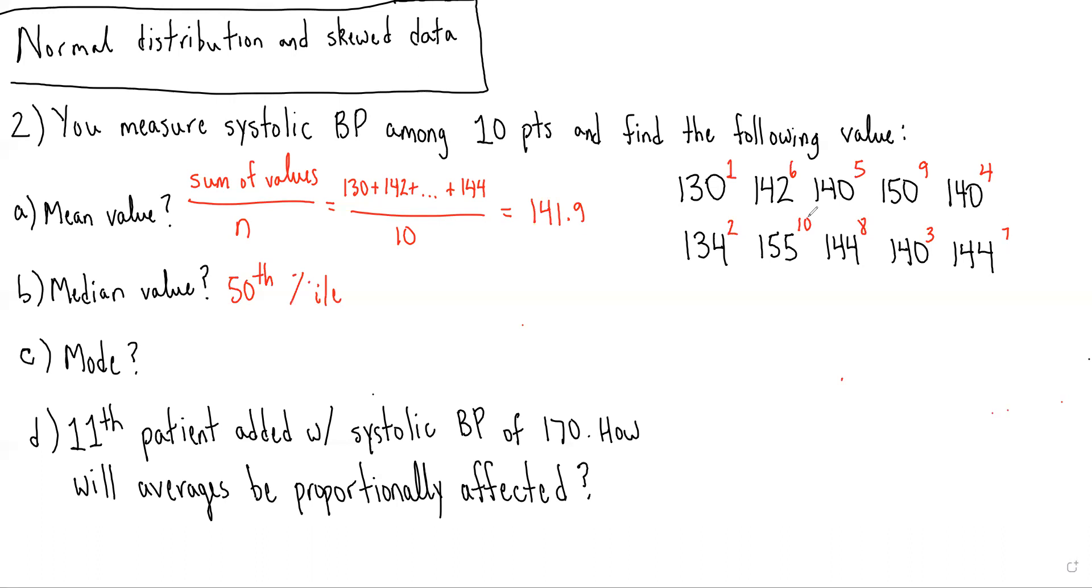So if you have 11 values, it would be the sixth value. But in this case, because we have an even number of values, in order to get the median, what we have to do is average the fifth and the sixth value, because there's no real middle value. So we would do 140 plus 142 divided by two equals 141. The one trick to the median is whether there's an odd number of observations or even will affect the way you determine it.